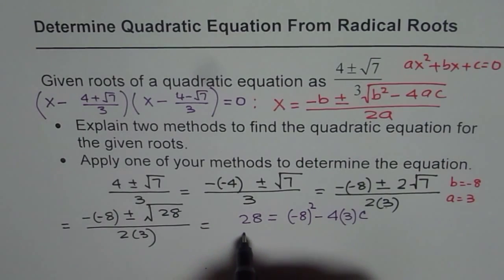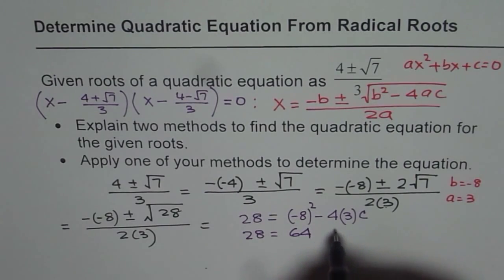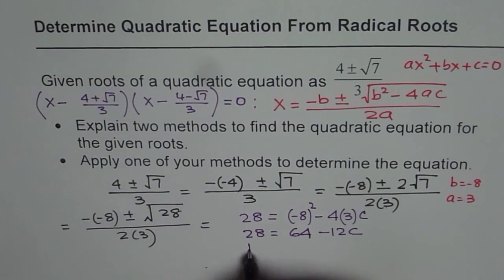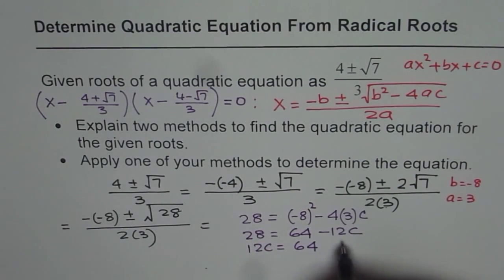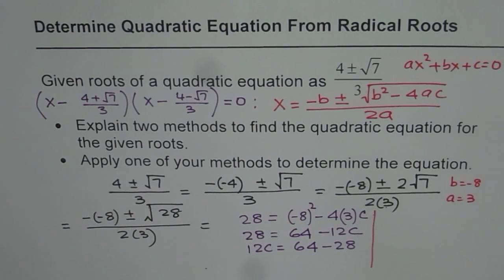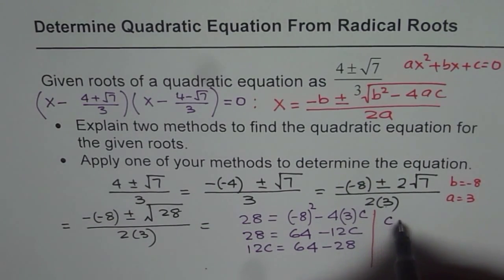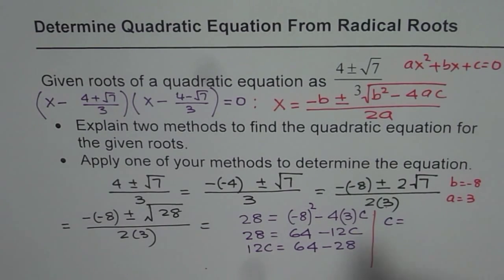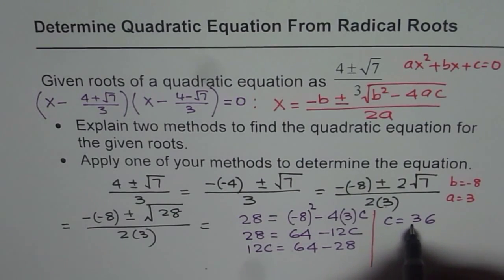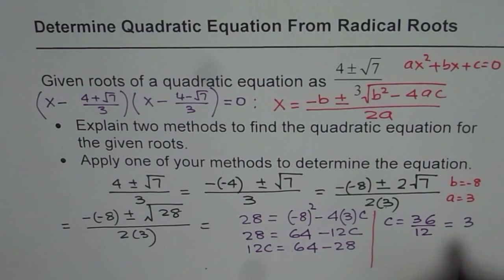We can rewrite this as 28 equals minus 8 squared is 64, and that is minus 12c. Now it is a question of solving for c. So 12c equals 64 minus 28. So c equals 64 minus 28 which is 36 divided by 12, and that gives us 3. Does it make sense to you? So what we have got here is c equals 3, and from there we can write down our equation.